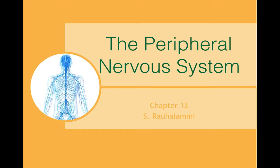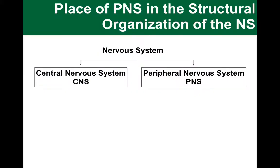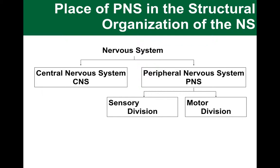You might remember how, in the earlier learning modules a couple of weeks ago, we divided the nervous system into central and peripheral nervous system. And the peripheral nervous system, abbreviated as PNS, can be divided into sensory and motor divisions.